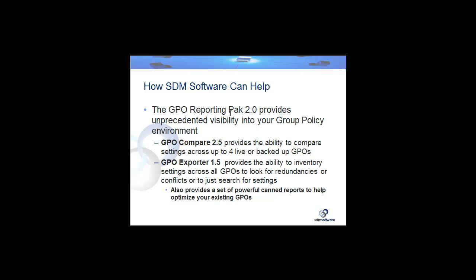GPO Exporter 1.5 provides the ability to really inventory settings across all GPOs, either in a single or in multiple domains, looking for redundancies and conflicts — essentially a database to search across all settings to see where they're being implemented. What I'm going to show you in this video is the powerful set of canned reports we've implemented to make this cleanup and consolidation problem a lot easier.